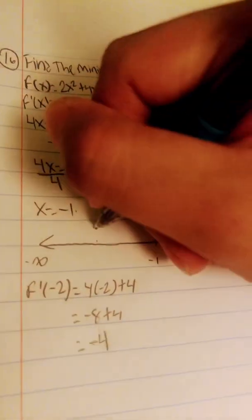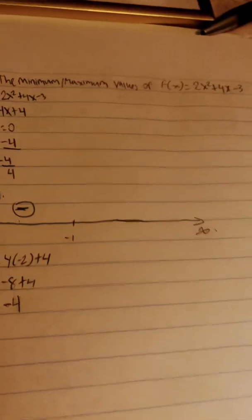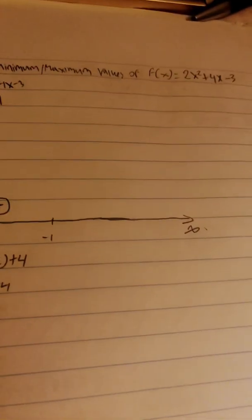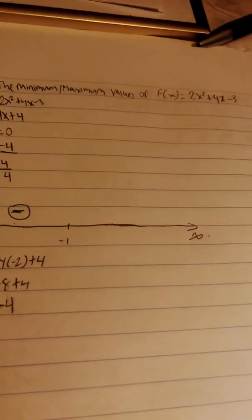So it is negative, so here we're going to put a little negative sign. Now test from negative 1 to infinity, so we can test x equals 0, basically.